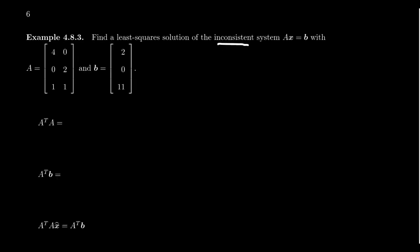For example, take the linear problem Ax equals b, and let's find the least squares solution. This system is inconsistent if we use the matrix 4, 0, 2, 1, 1 and the vector 2, 0, 11. Now, in order to find the least squares solution, you have to first compute the normal equations, A transpose A equals A transpose b.